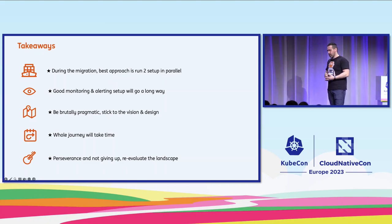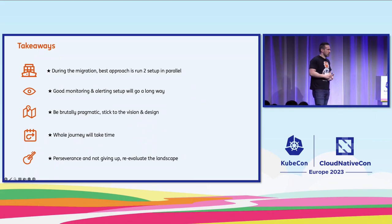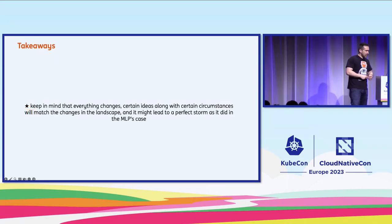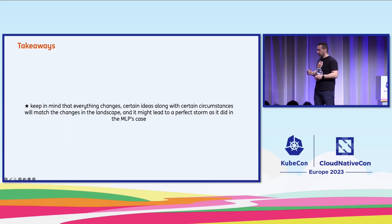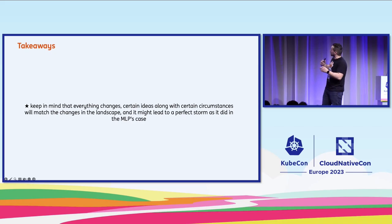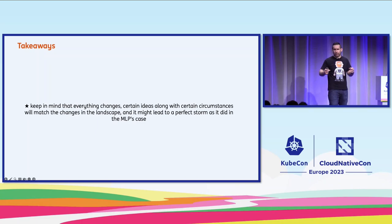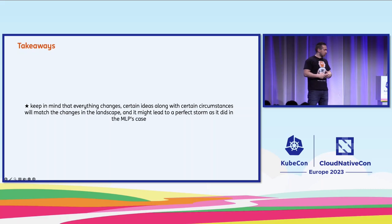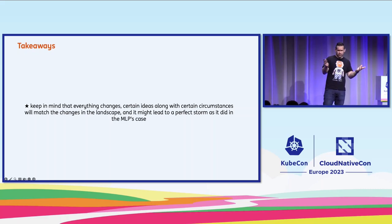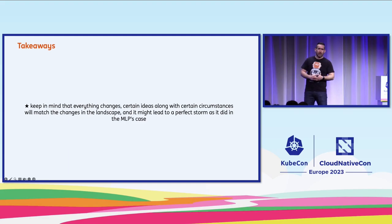Even with the private cluster, I tried doing the same thing with Raspberry Pis before — it just wasn't a good experience, the hardware wasn't up for the job, and now it was. Maybe that's one of my biggest takeaways: keep in mind that everything changes. Certain ideas along with certain circumstances will match changes in the landscape and might lead to a perfect storm, as it did in MLP's case. That was our journey — and why, for all of you still running on VMs, I think with Kubernetes, resistance is futile. Thank you.